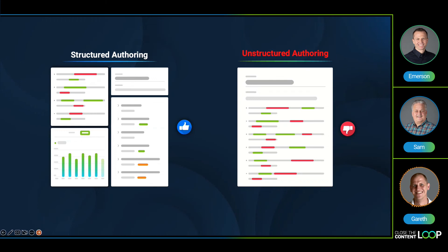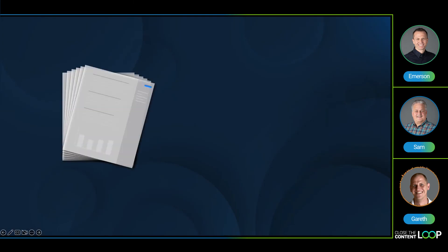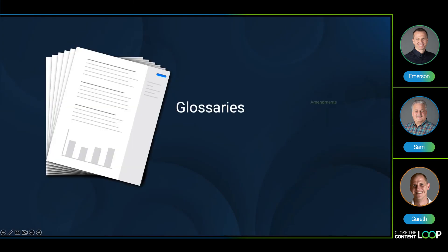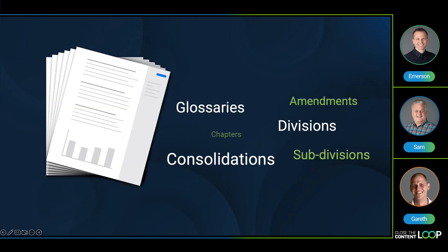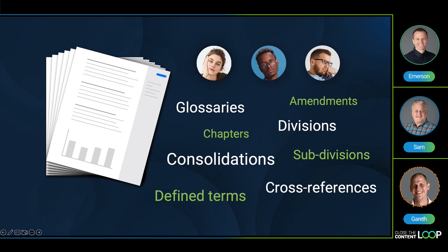Let's start with structure. There may be quite complex structures in place that are used inconsistently — such as parts, chapters, divisions, and subdivisions — and it can be challenging to ensure that all drafters are adhering to the same common structure.